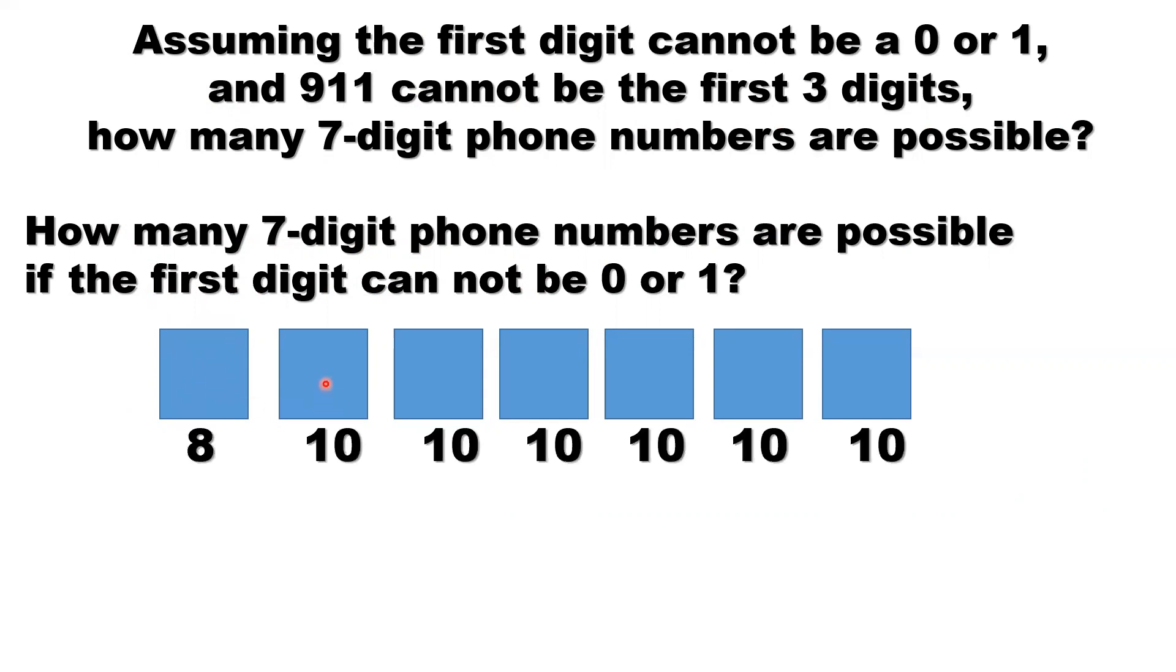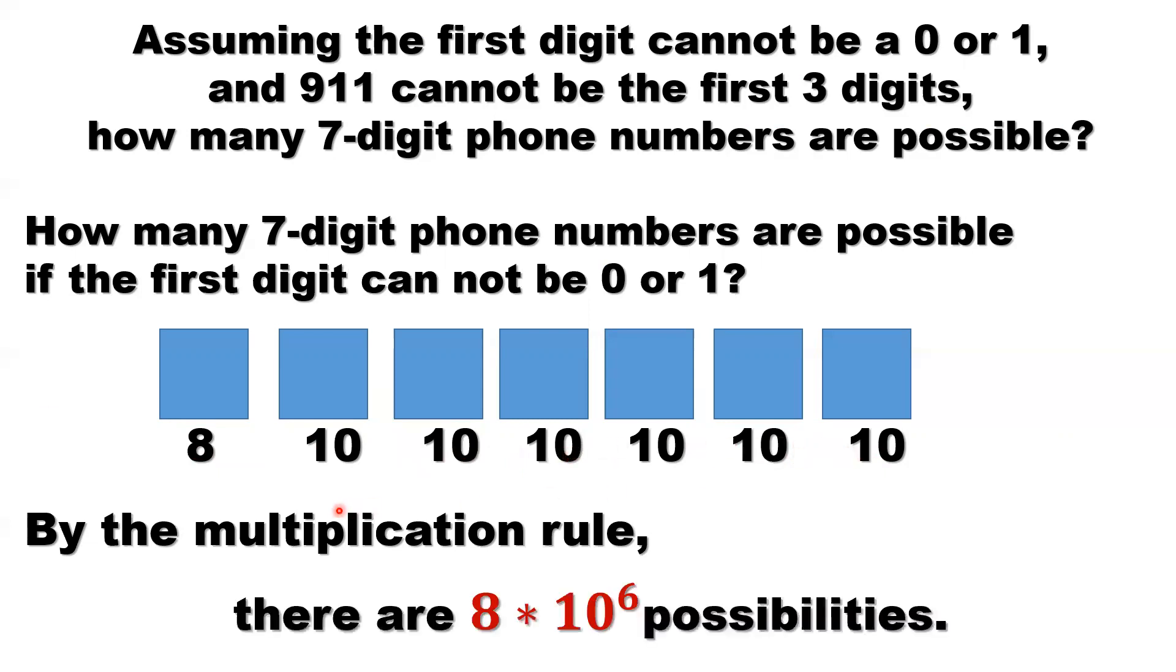Then you have 10 possibilities for the remaining digits. How many? That's 6. Now what's the total numbers are possible? So here should be 8 times 10, 10 times 10, times 10, times 10 to the power of 6.